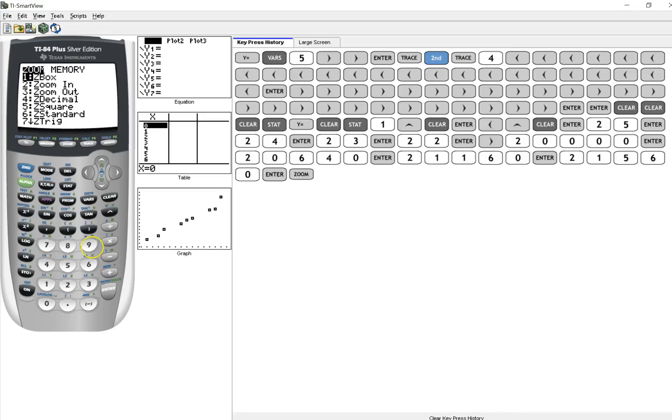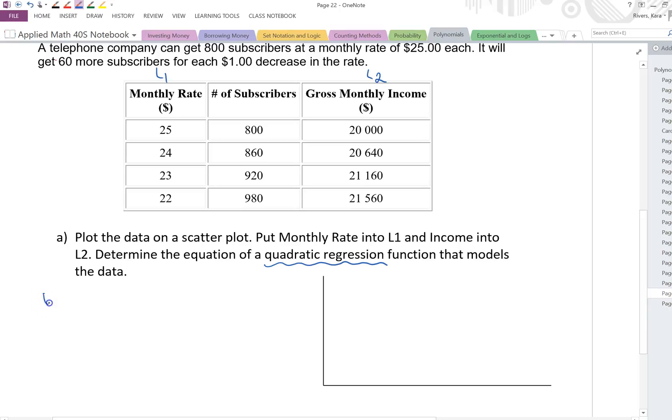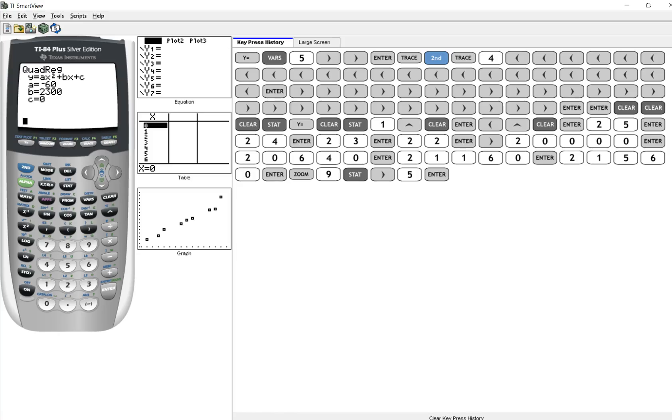Now that we have this in here, let's go ahead and zoom 9. Now to me, this almost looks like it's linear, but they're telling me it's a regression function that's quadratic. So let's go ahead and do that. So we're going to go into stat, calc. This is a quadratic regression 5. Enter. And it gives me the equation. Let's write this down. The equation is y equals negative 60x squared plus 2300x.